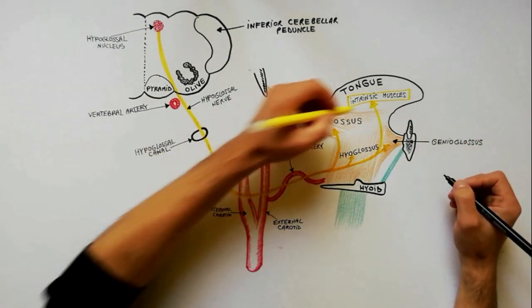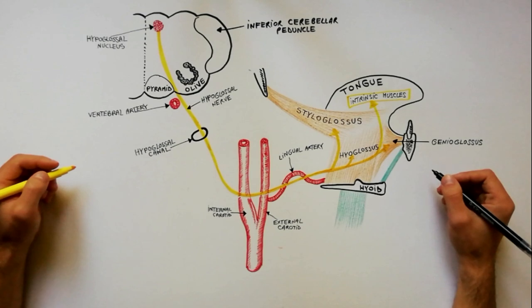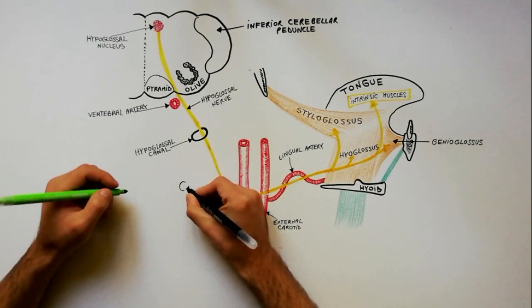Those were branches of the hypoglossal nerve proper. The hypoglossal nerve also carries fibers from the C1 spinal nerve, which we will indicate further using the green color.